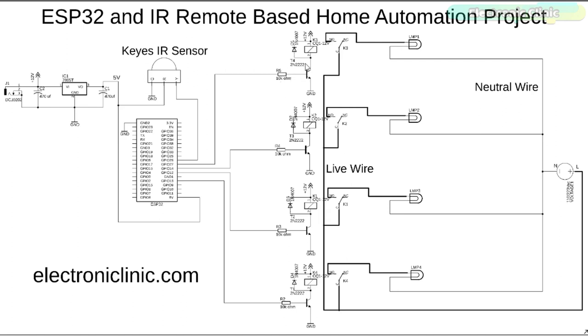One pin of the relay coil is connected with the collector of the 2N2222 NPN transistor while the other pin of the relay coil is connected with the 12 volts. The emitter of the transistor is connected with the ground while the base is connected with the 10 kilo ohm resistor.